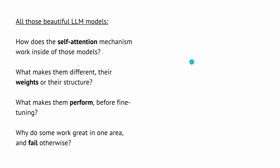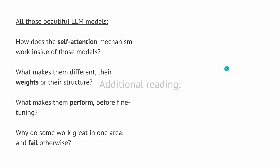So those were the questions at the very beginning: how does the self-attention mechanism work inside those models? What makes them different — the weight, the attention, the structure, the layers, the number of heads? What makes them perform, and why are some great in one area and fail in another? I hope I've given you a new instrument you can try out on your particular model, and maybe a first understanding of how self-attention works, attention weights, structure, and performance.